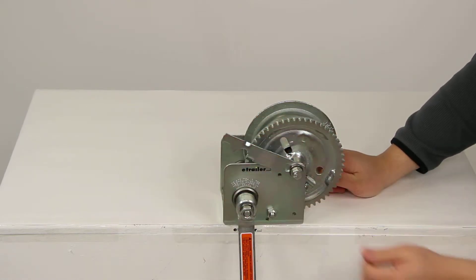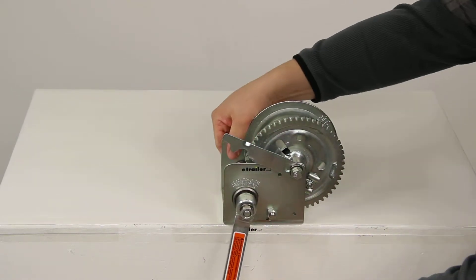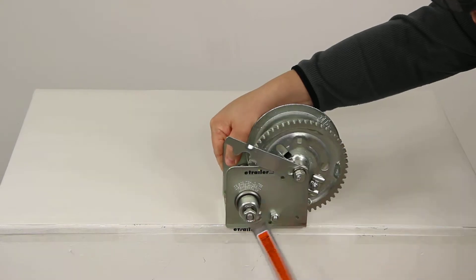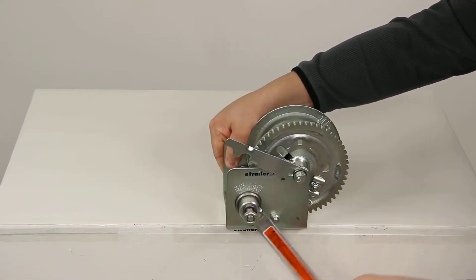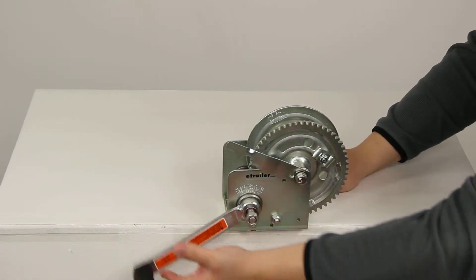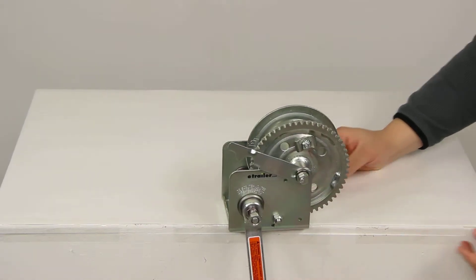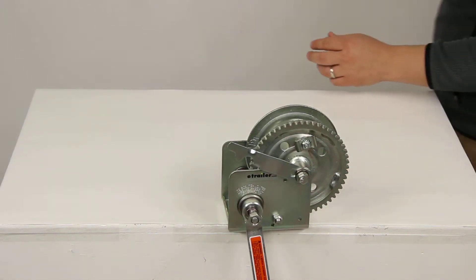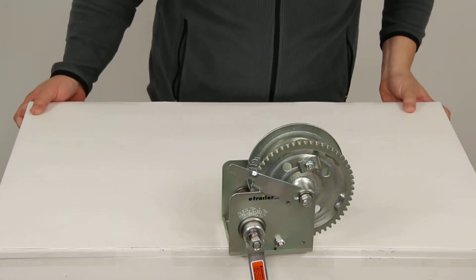So if we disengage that lever and then tighten back up our handle, when it starts clicking we know that it's engaged and it's ready to bring in the load. Now when we let go of that the brake automatically takes effect and it's going to hold the load in place.